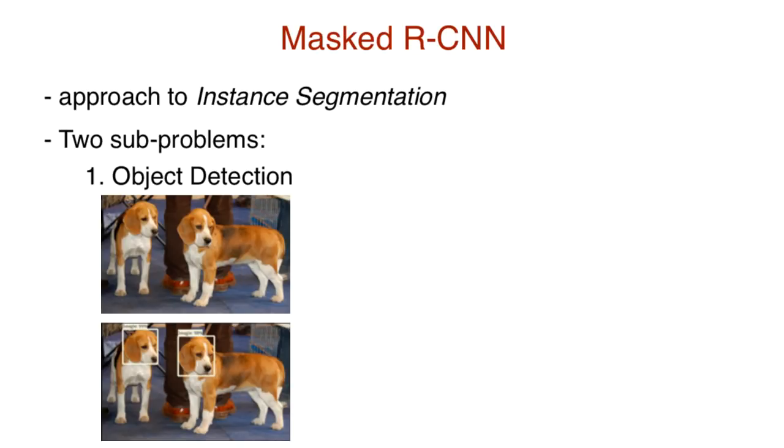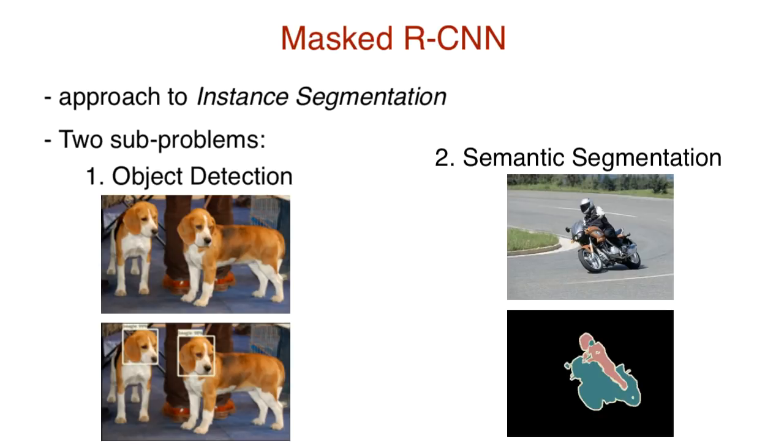The second part of instance segmentation is semantic segmentation. Semantic segmentation is the understanding of an image at the pixel level. That is, we want to assign an object class to each pixel in the image.